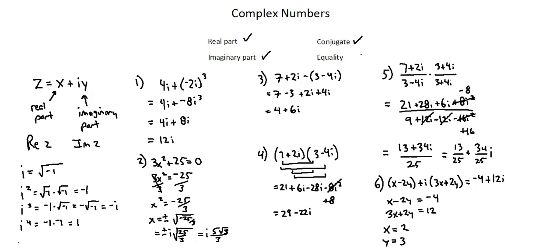We've now covered the concepts of real part, imaginary part, conjugate, and equality. And we've worked through several examples of performing operations with complex numbers. This concludes complex numbers lesson one.